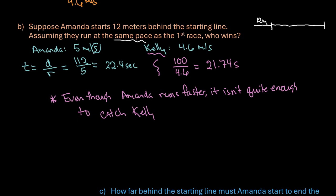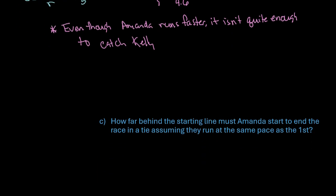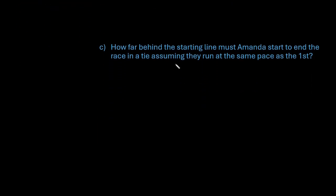The last situation that I want to talk about with you is what happens if we're trying to figure out how far behind the starting line must Amanda start to end the race in a tie, assuming they run at the same pace as the first. For this one, it might be helpful to set up a chart where we have Kelly and we have Amanda, and we have the information that we know.